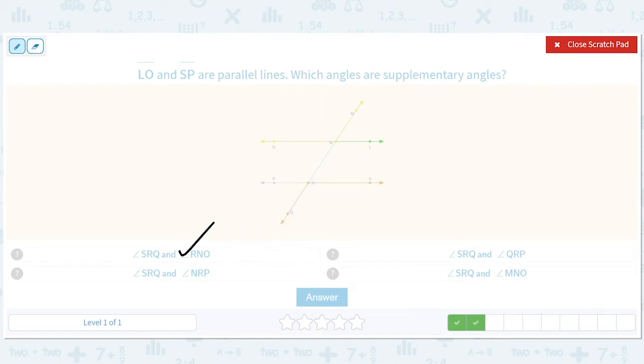SRQ and NRP. So that's SRQ, NRP. No. They are not. Those are vertical angles. SRQ and QRP. So SRQ and QRP. Yes. That's good.